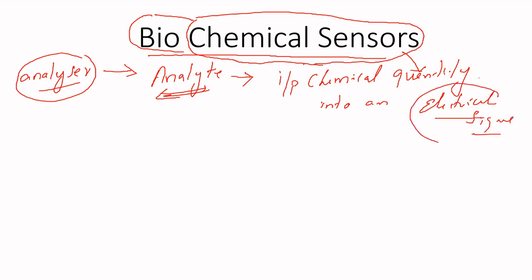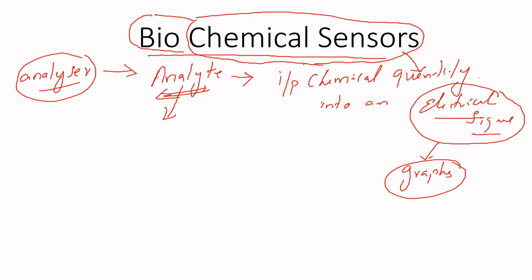This electrical signal can be recorded through graphs so that doctors can do an analysis. That is the basic of the chemical sensor. Now let me introduce the term analyte. An analyte is a chemical substance or a substance whose chemical constituents need to be analyzed.